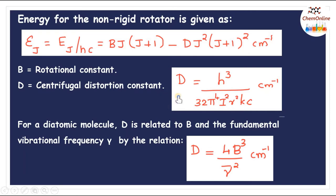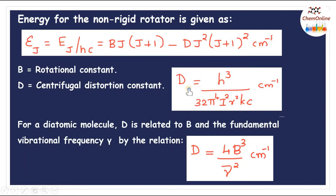D is a small positive quantity. For a diatomic molecule, the centrifugal distortion constant D is related to the rotational constant B and the fundamental vibrational frequency ν̄ by the relation D = 4B³/ν̄² cm⁻¹, where ν̄ is the frequency in wavenumber (cm⁻¹), given by ν̄ = ν/c = (1/2πc)√(k/μ). We can see that D is inversely proportional to the moment of inertia I, the bond length r, and the force constant k.